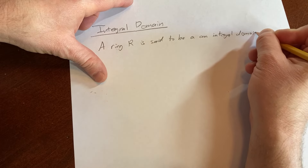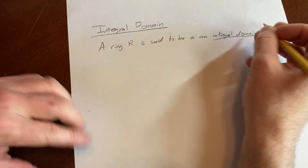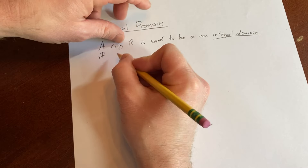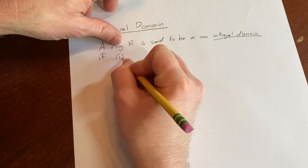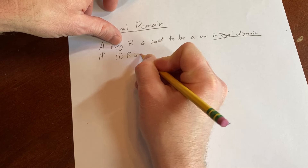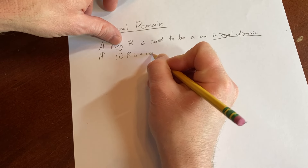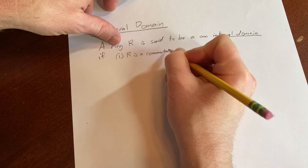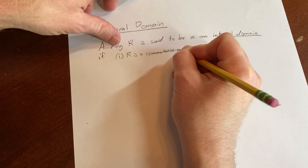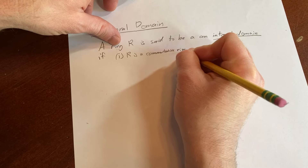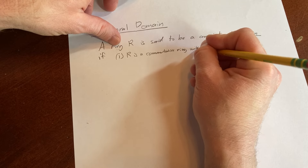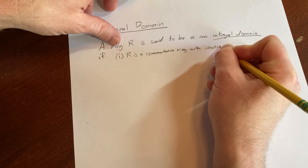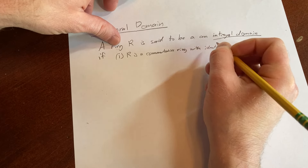R is an integral domain if the following conditions hold. First, R is a commutative ring with identity.